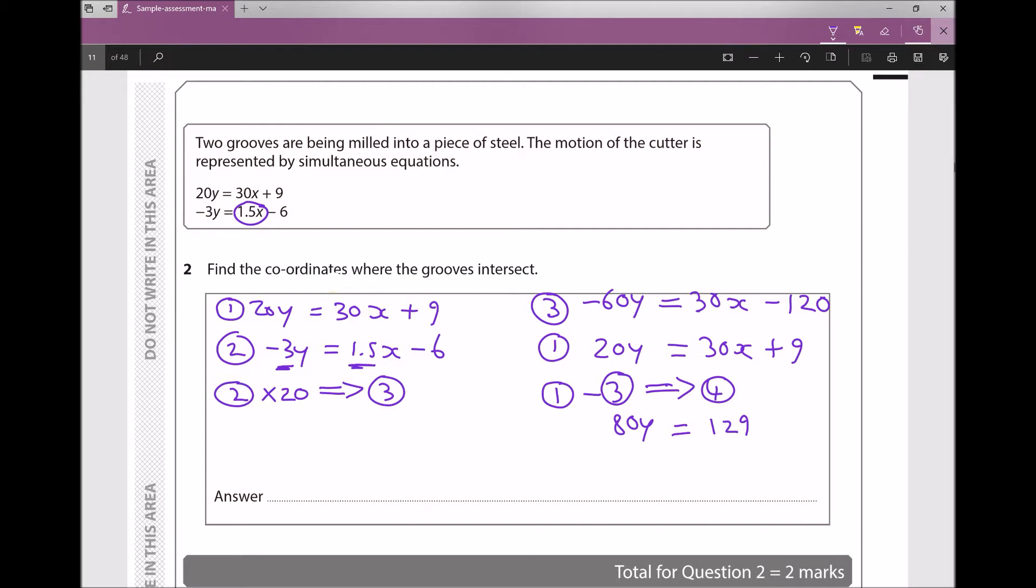Therefore, my y component is just going to be 129 divided by 80. 129 divided by 80 gives me my y coordinate, which is 1.6125.